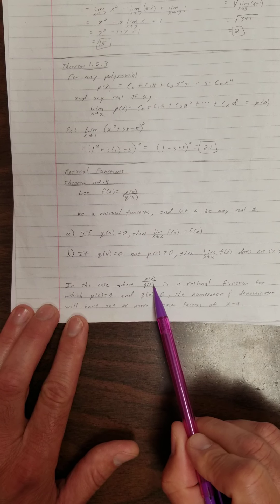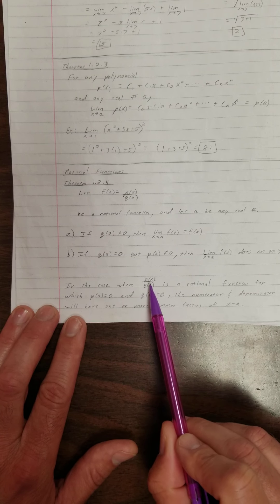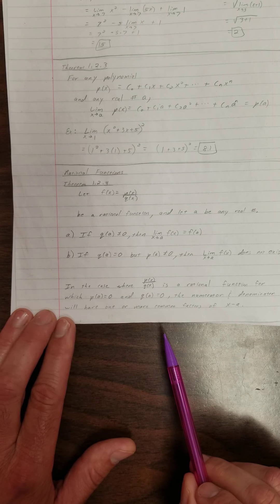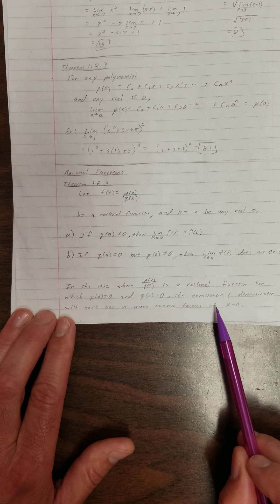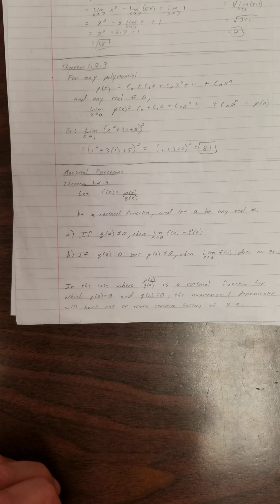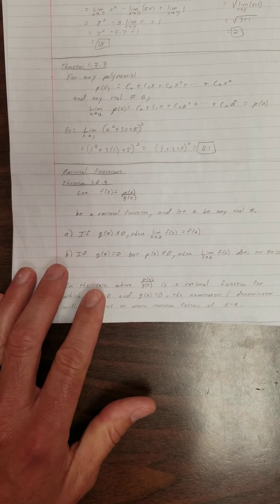How about this? The case where p of x over q of x is a rational function, and if you try to evaluate the limit at the top and the bottom, they're both equal to 0, then what we try to do is we try to factor that function, divide out stuff, and take the limit. Alright, let's look at these cases.